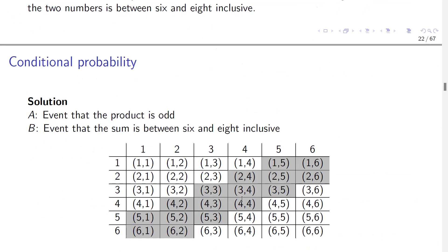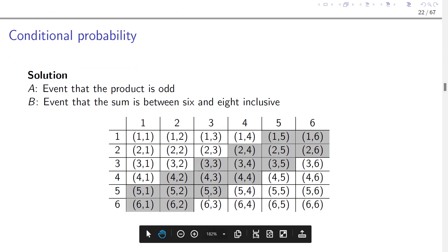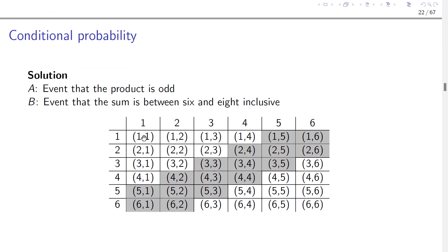First, we need to define the new sample space, which is event B — the condition we are conditioning on, meaning the sum is between six and eight. With two fair dice, let the top row be the first die and the first column be the second die, each with numbers one to six. These are all the possible outcomes when you roll two fair dice. You may get one on each, or one on the first and two on the second, and so on. Now, the new sample space is event B: which outcomes, when summed, give six, seven, or eight? One plus five is six, four plus three is seven, six plus two is eight — all outcomes summed to six, seven, or eight are our new sample space.